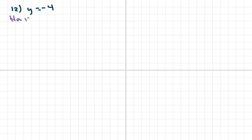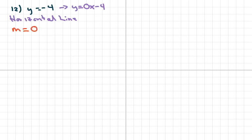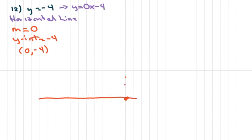This one is horizontal line form. You can rewrite this as y in slope-intercept form, which means your slope is 0 and your y-intercept equals negative 4, or written as (0, -4). Since it's horizontal line form, it's going to be a horizontal line — go 1, 2, 3, 4 — the slope is 0 so we're not going up, and you just draw a horizontal line through the y-intercept. Thank you and have a nice day, bye bye.